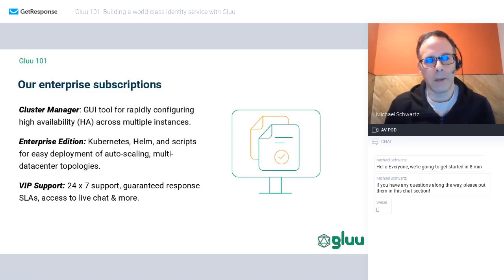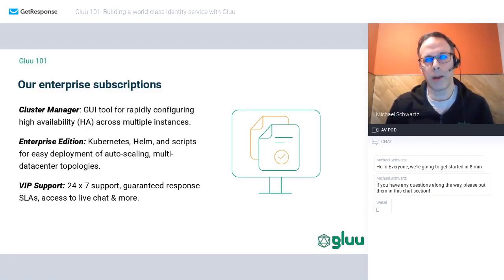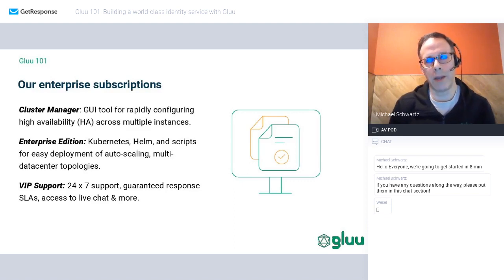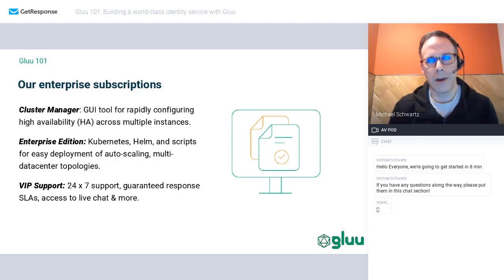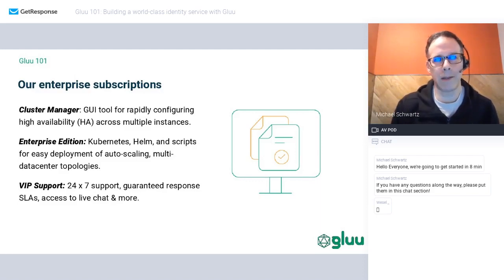What do we actually sell? We sell support — the VIP support subscription is a per-component subscription that allows you to get support on things like GLUE, Gateway, OpenID, SAML, or social login. We also sell deployment tools. We have two ways to deploy highly available topologies of GLUE servers. One is called Cluster Manager — a way to deploy a highly available cluster of GLUE servers using the RPMs or DEBs. It's a deployment tool, meaning you could use Cluster Manager to deploy your cluster and then turn it off and you'd be fine, so it's not really needed at runtime.